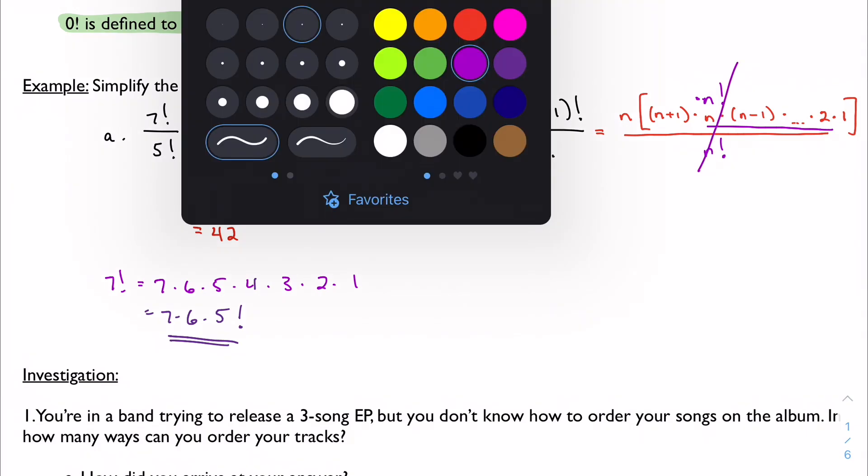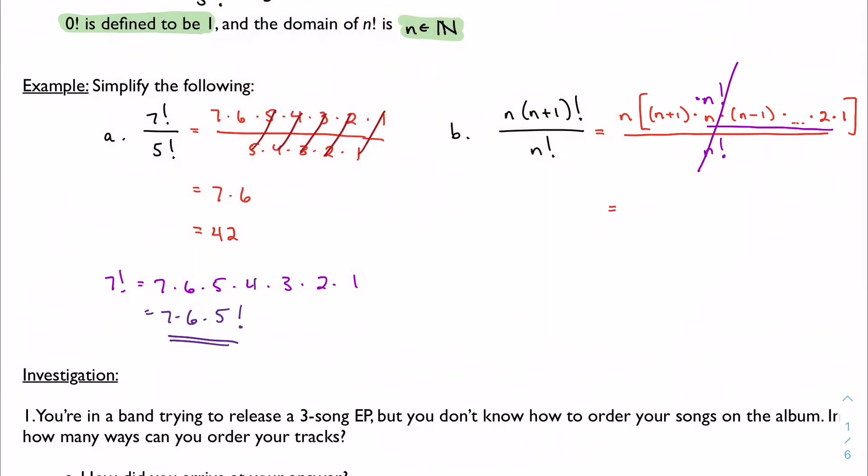And that all cancels out. I'm left with n times n plus 1. And if you wanted to distribute it, you could, but you wouldn't have to. We can actually work with this still in general, and we can work with it with actual numerical values as well. Just a way to get us started thinking about factorials.